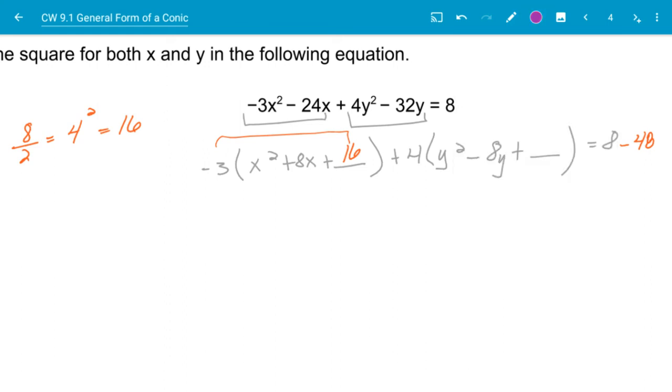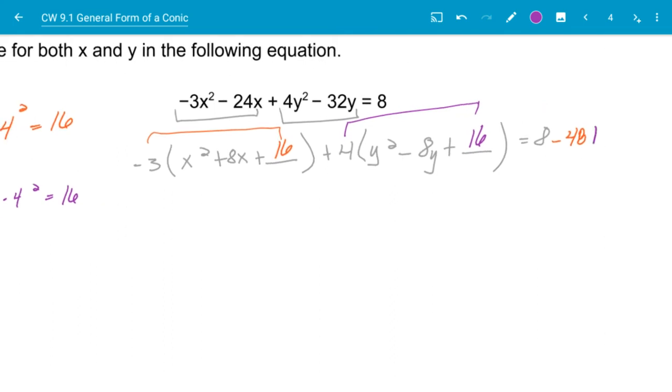So for my y here, I'm going to go ahead and this will be a negative 8. Divide it by 2, that gives me negative 4. I square it, and that will give me a 16 that I add in there as well. Except on this side, now I'm going to be multiplying that 16 times 4. So in effect, I've actually added in a 64.